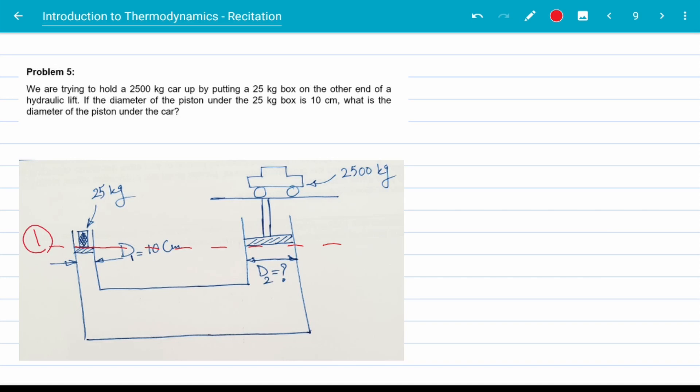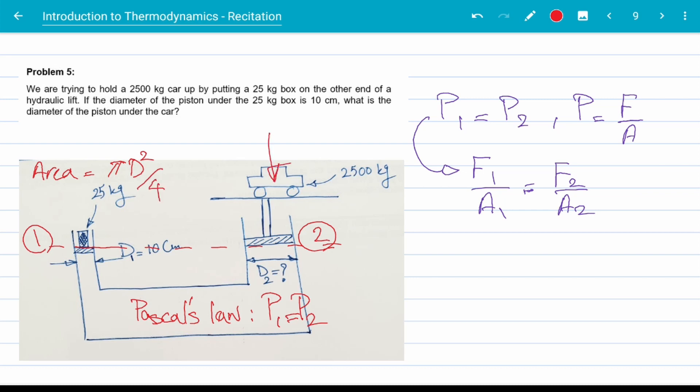Pascal's law suggests that point one and two have the same pressure, p1 is equal to p2. We know that pressure is force over area, so f1 over a1 is equal to f2 over a2. Just a reminder that the area of a circle, because pistons are usually circular, is pi times diameter squared over 4. Forces acting on each piston are the weights of the car on piston 2 and box on piston 1.